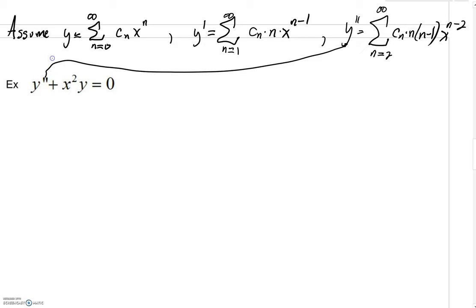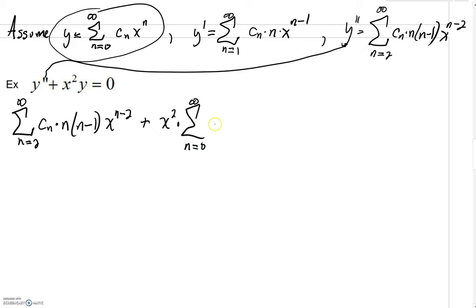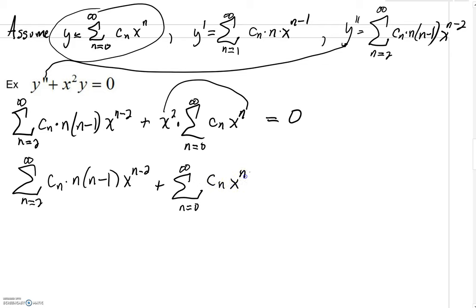We're going to substitute this all in and see where we go. Here's our y double prime. y double prime, we're going to have n equals 2 up to infinity. We'll have c sub n times n times n minus 1 times x to the n minus 2. That's what we just wrote right there. Then we'll have x squared. But our y, you can see that's really what we had right up here. We'll have from n equals 0 up to infinity of c sub n x to the n. Leave your first sigma where it is. Our second sigma, however, we're going to distribute this in. This is where we just add our powers together. We'll have c sub n. This is x to the n plus 2.